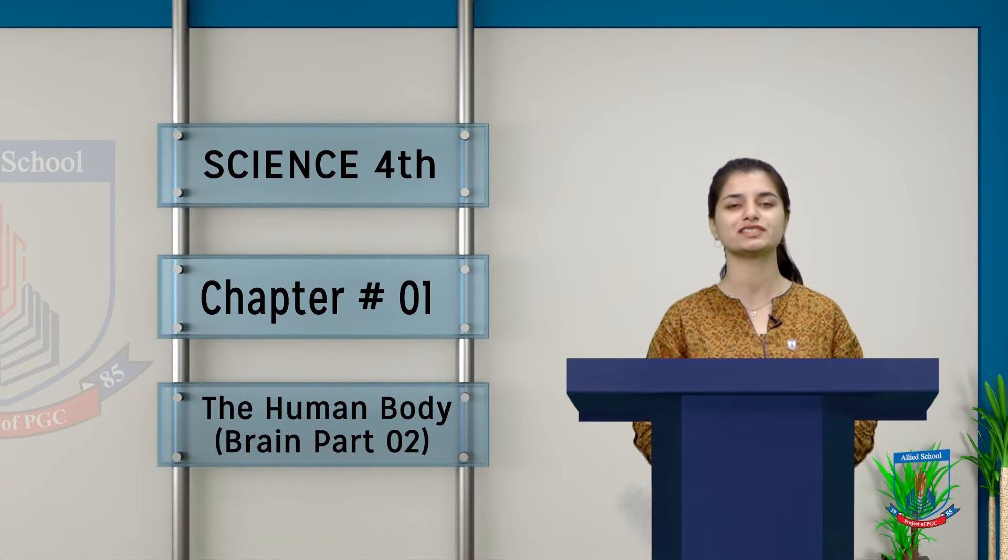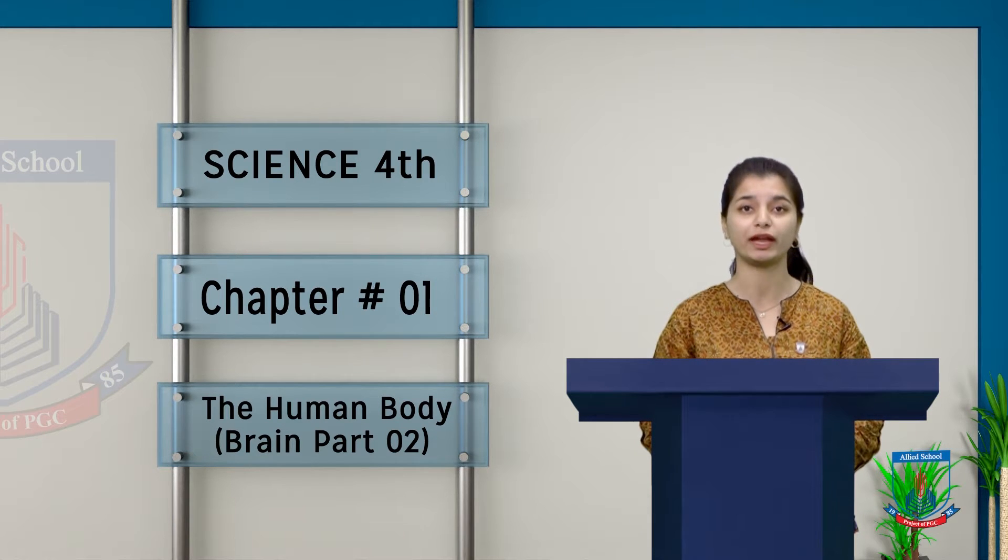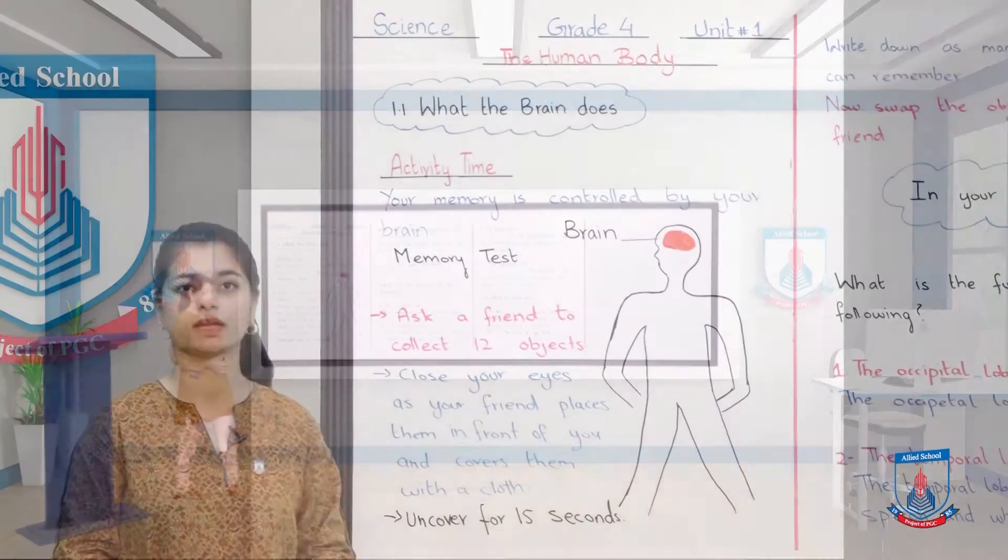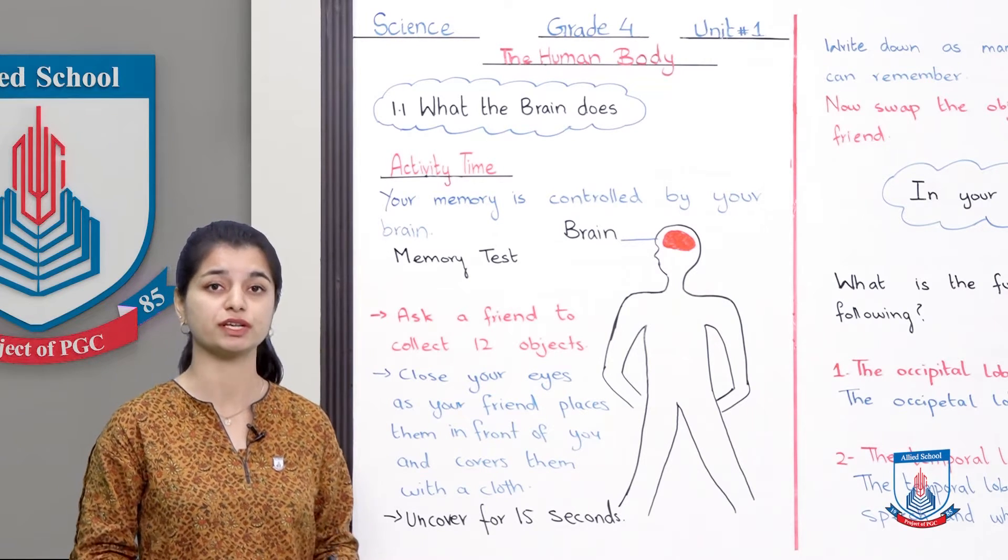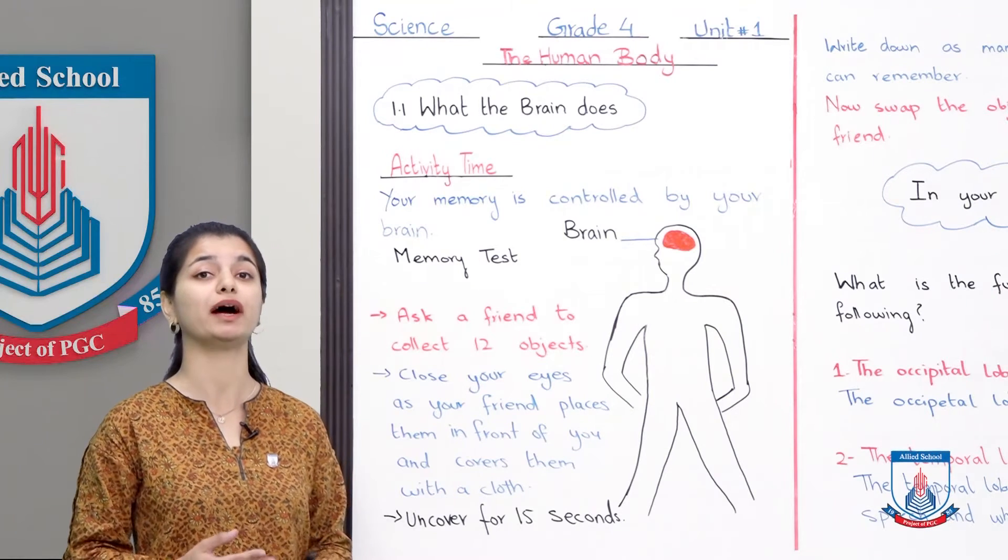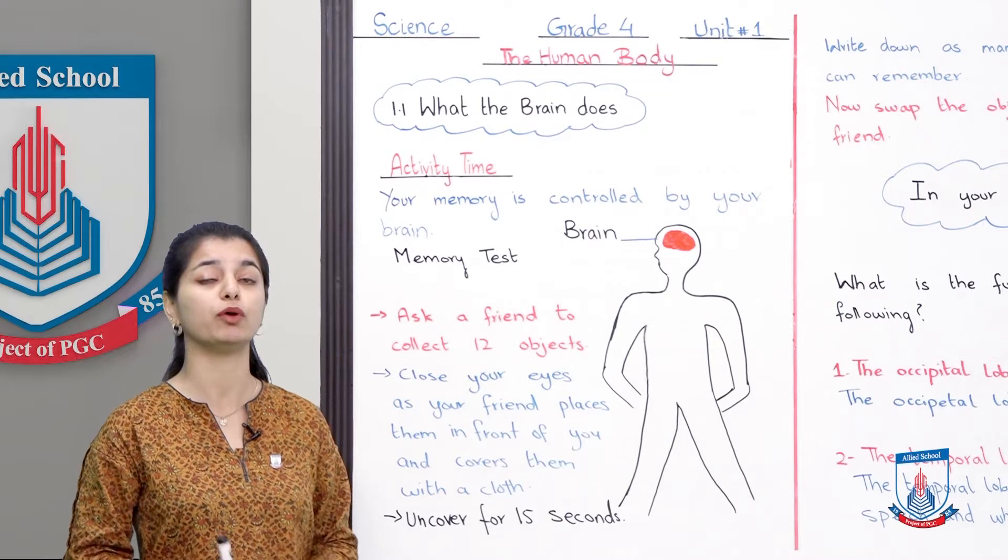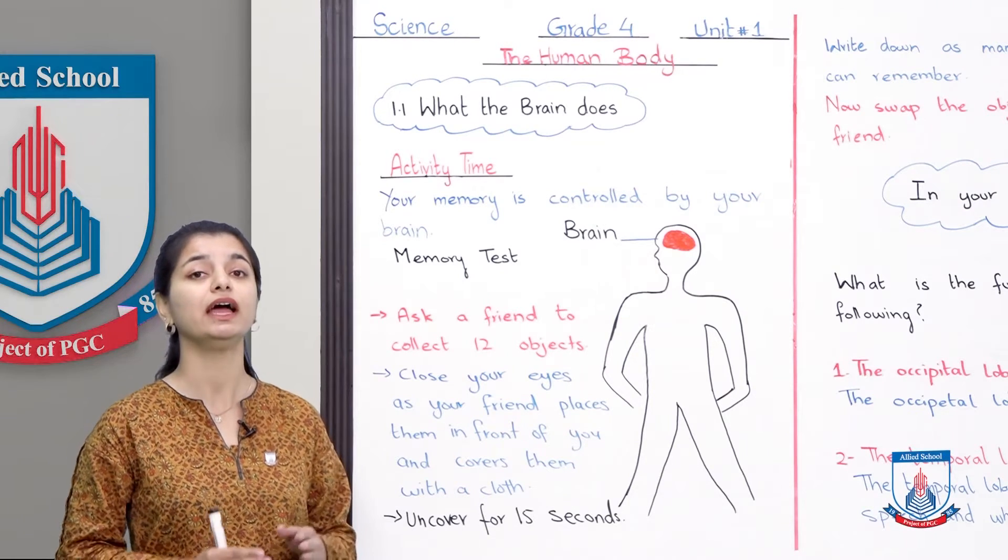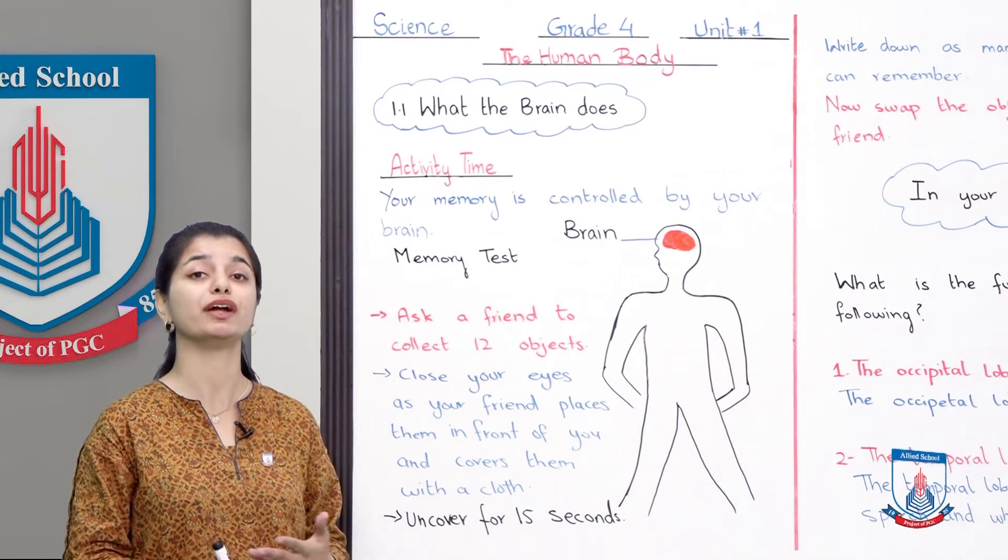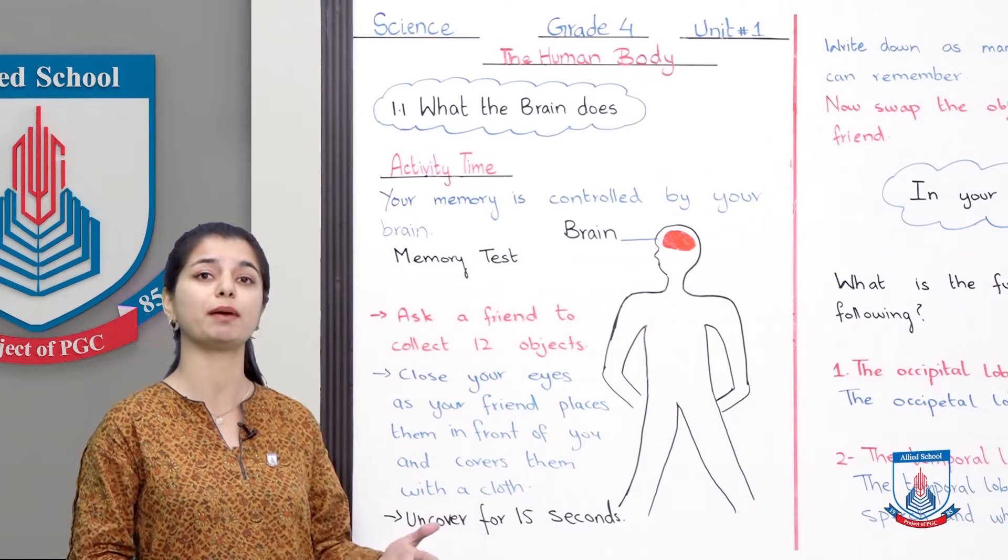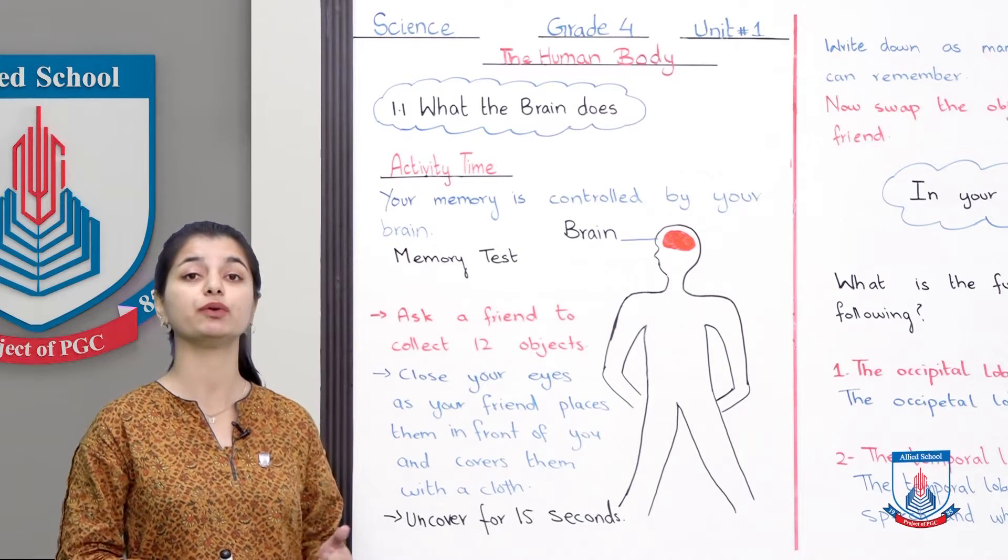Assalamu alaikum grade 4, I'm your science teacher Sabah and we're discussing chapter 1, the human body. Today we'll be taking this further about the brain, so let's get to the board. In the previous lecture we discussed the brain, its different parts and functions. The brain is an important part of our body and part of the nervous system. The brain has two main parts.